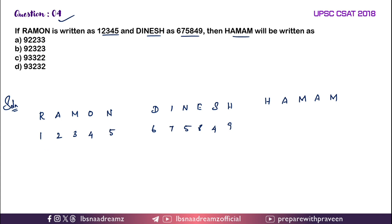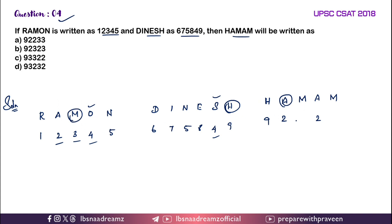Just observe the words and the given numbers. There is no relation between the words and the numbers based on letter position — because if you take 4, here O is there, and for this 4, S is there, so there is no positional relation. So for H, what have they given? 9 is given here. For A, they have given 2 — and for this A also we can write 2. What is the code for M? 3. So the code we have got is 9, 2, 3, 2, 3 — Option B is the right answer.